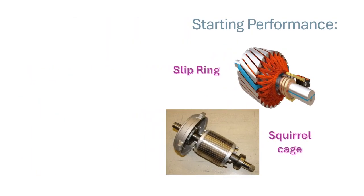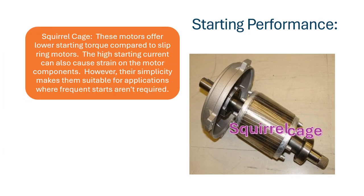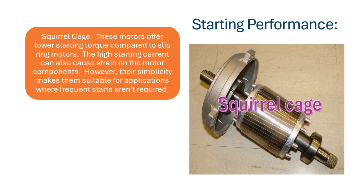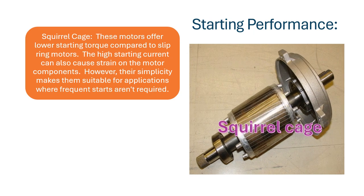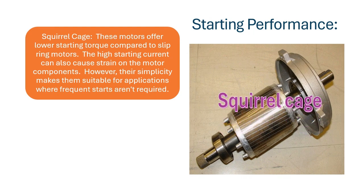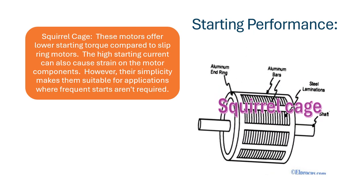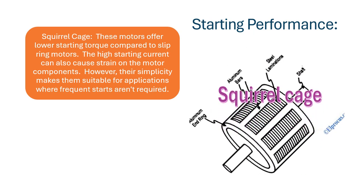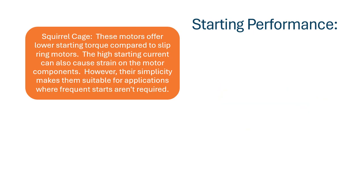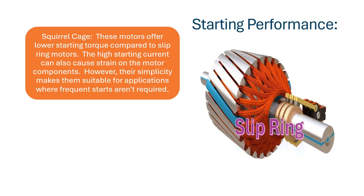Starting Performance — Squirrel Cage: these motors offer lower starting torque compared to slip ring motors. The high starting current can also cause strain on the motor components. However, their simplicity makes them suitable for applications where frequent starts aren't required.